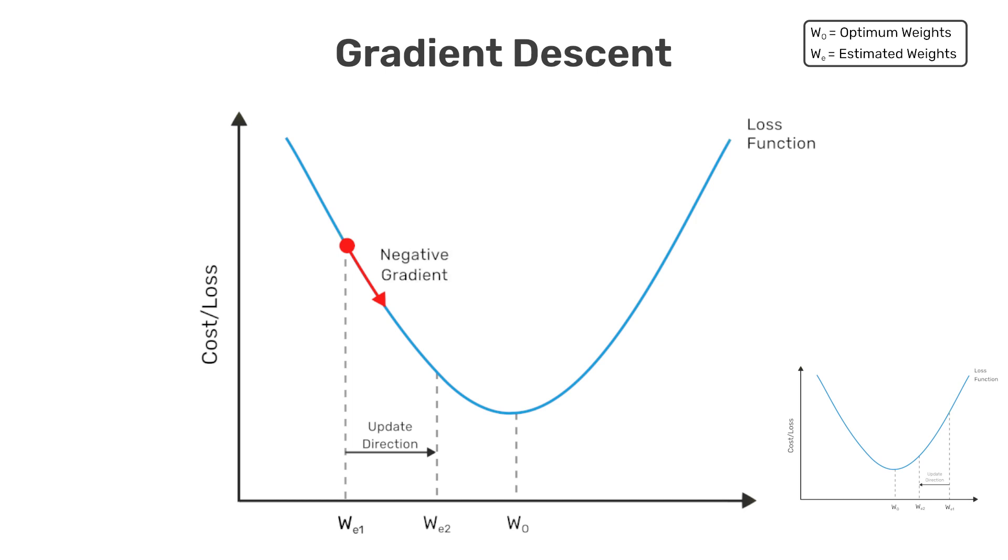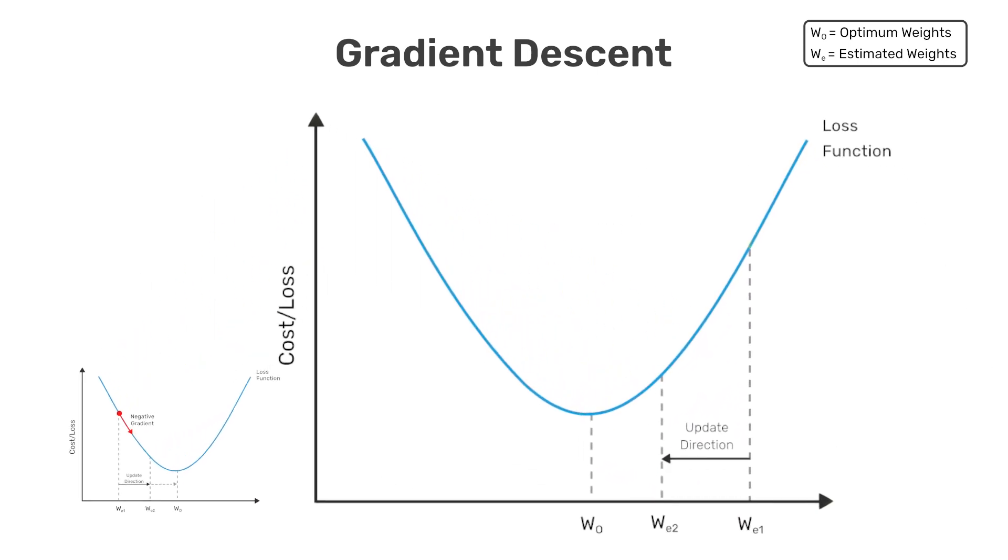But you can also see from the figure that in this situation, we would need to increase the weight to get closer to the optimum value indicated by w0. So we would need to move in a direction opposite from the sign of the gradient. On the other hand, if our current weight is greater than w0, as shown in the plot to the right, the gradient would be positive.